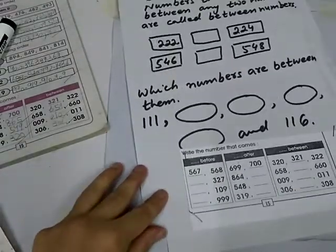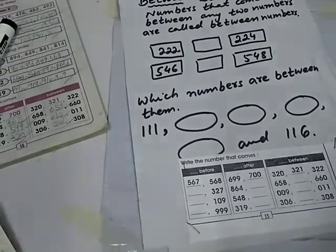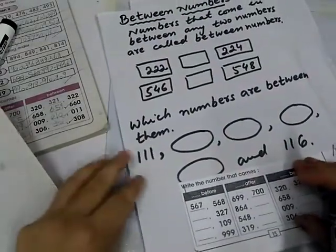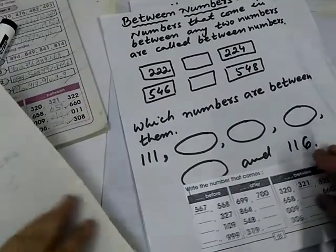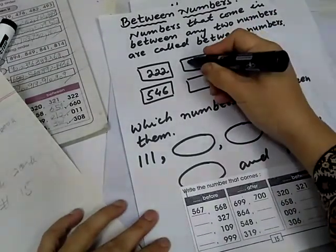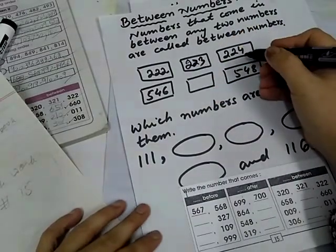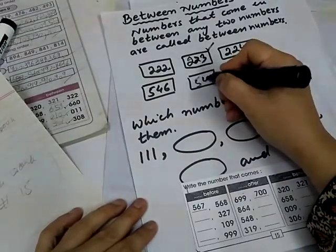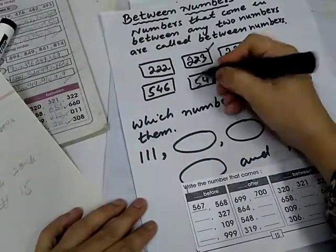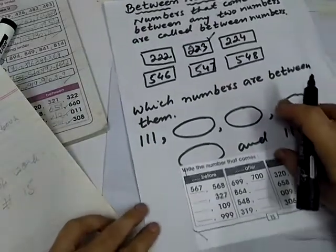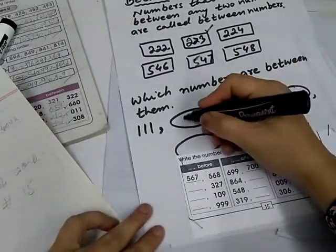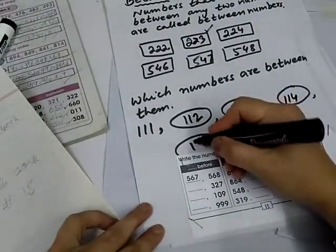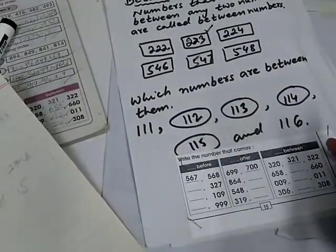Now, between numbers. Numbers that come in between any two numbers are called between numbers. Jo numbers center me aathe hai, unhame kehte hai between numbers. So, 222, 223, and 224. 223 is a between number. 546, 547, 548. Now, which numbers are between them? 111, 112, 113, 114, 115, and 116.